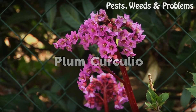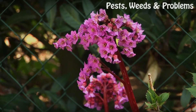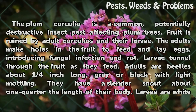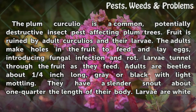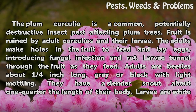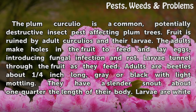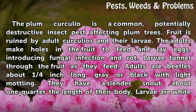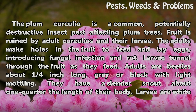Plum Curculio. The Plum Curculio is a common, potentially destructive insect pest affecting plum trees. Fruit is ruined by adult curculios and their larvae. The adults make holes in the fruit to feed and lay eggs, introducing fungal infection and rot. Larvae tunnel through the fruit as they feed.